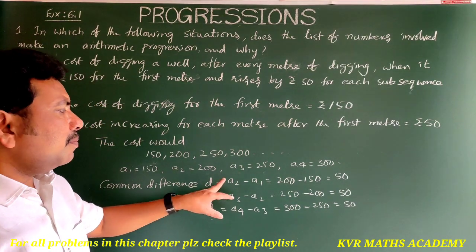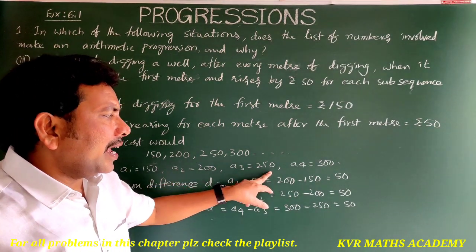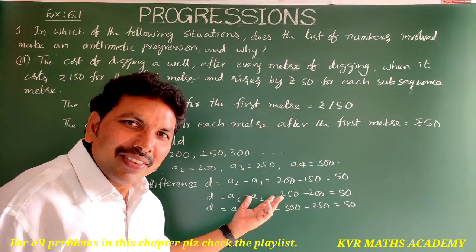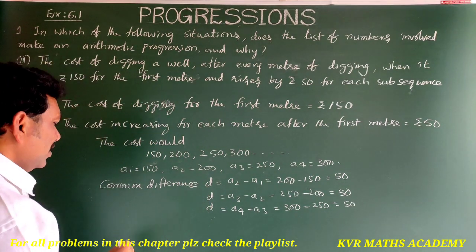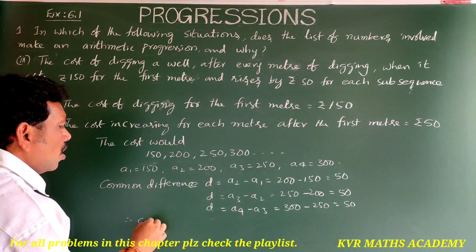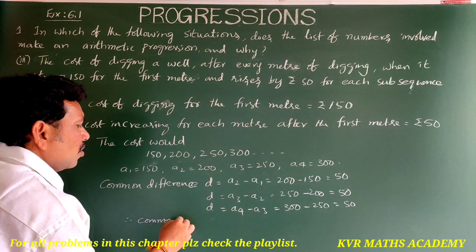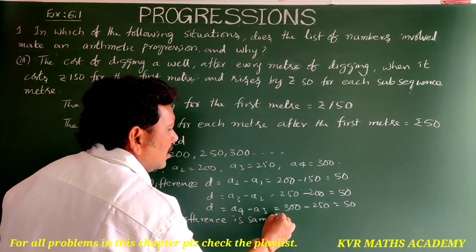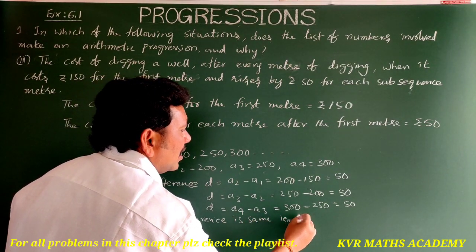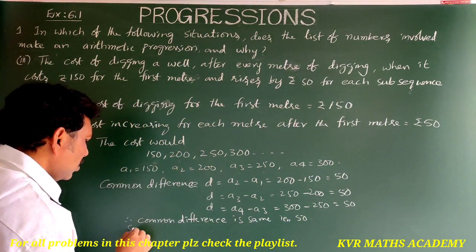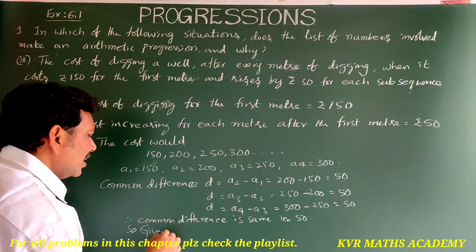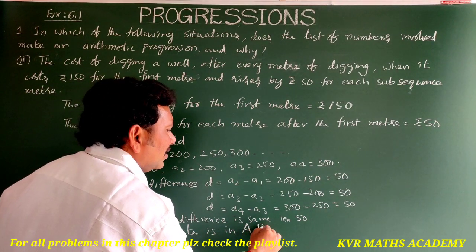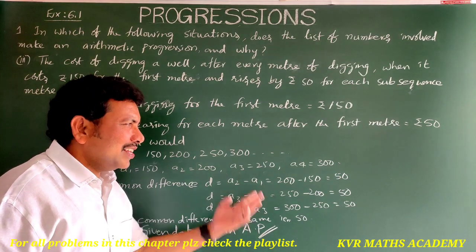The common difference is the same throughout, equal to 50. Therefore the given data is in AP.